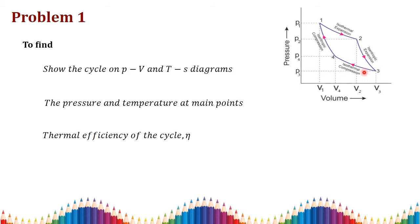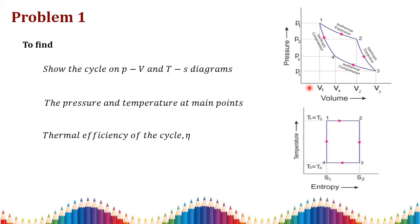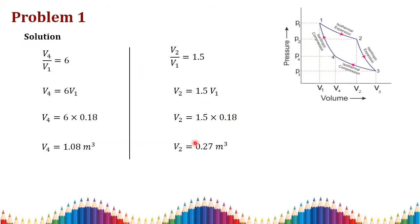The pressures are p1, p2, p3, p4 and the volumes are v1, v2, v3, v4. For the isothermal process, t1 = t2. Since process 2 to 3 is isentropic, s2 = s3 and there is no heat transfer. For the isothermal compression 3 to 4, t3 = t4. Process 4 to 1 is isentropic compression.